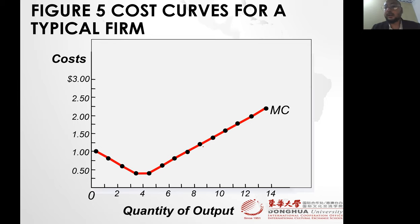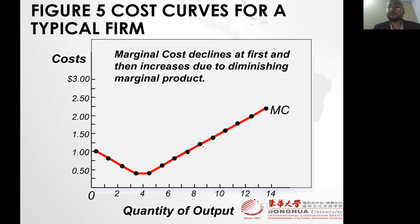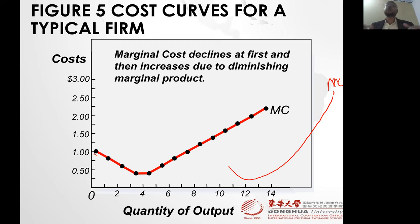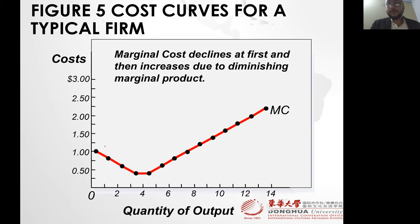Marginal cost curve is like a hockey shape — it decreases and then increases. Because we have only limited data that we use to practice the graph, the curve is based on limited data. But if you have more data and more practical data, it is like a hockey shape: first decreases and then always increases.